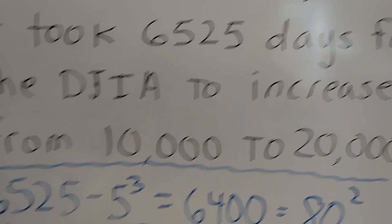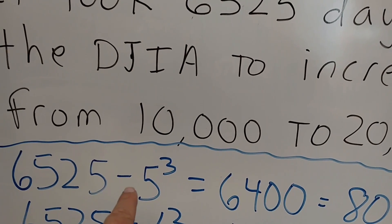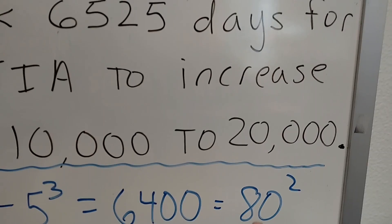Let's do this one here. If I take 6,525 and subtract 5 cubed, I get 6,400 which is 80 squared.